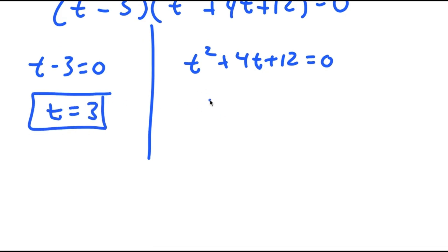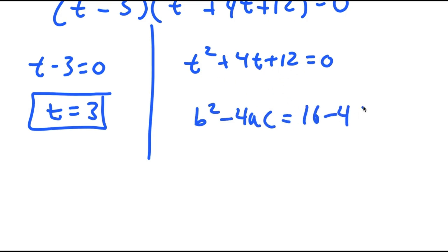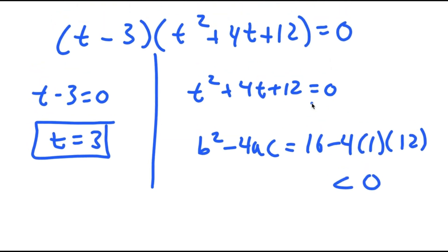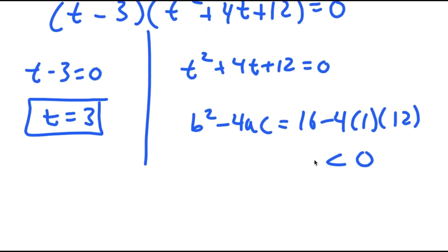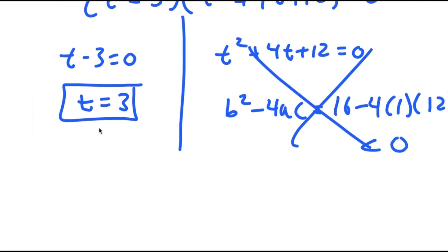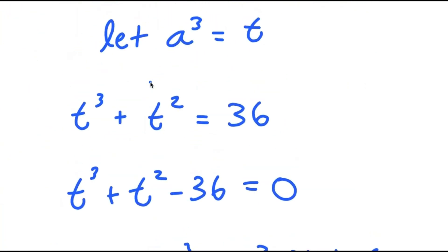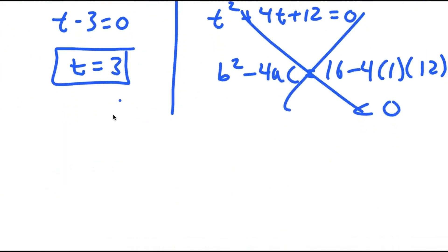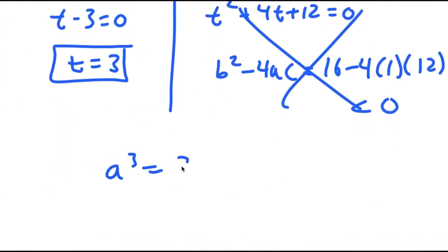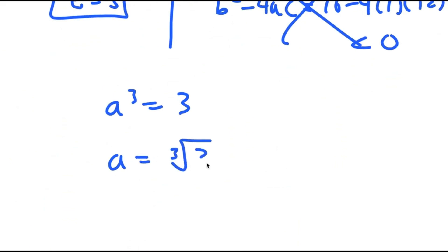We already know t equals 3 is a solution. But for t squared plus 4t plus 12 equals 0, let's first do b squared minus 4ac to see if there are any real solutions. b squared is 16; I get 16 minus 4 times 1 times 12, which is less than 0, meaning this is a negative discriminant. You can't take the square root of a negative number for a real solution, so there's no real solution here. Meaning t equals 3 is my only solution. Recall how a to the power of 3 equals t, so a to the power of 3 equals 3, and a equals the cube root of 3.